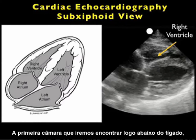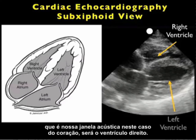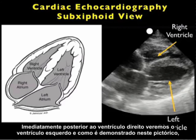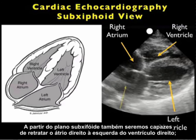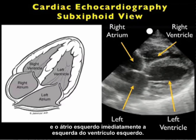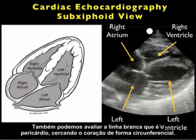The first chamber we'll encounter directly below the liver — which is our acoustic window in this case onto the heart — will be the right ventricle. Immediately posterior to the right ventricle, we'll be seeing the left ventricle. Notice that it has more muscular and hypertrophic walls. From the subxiphoid plane, we'll also be able to image the right atrium to the left of the right ventricle, and the left atrium just to the left of the left ventricle. We can also appreciate the white line that is the pericardium circumferentially surrounding the heart.